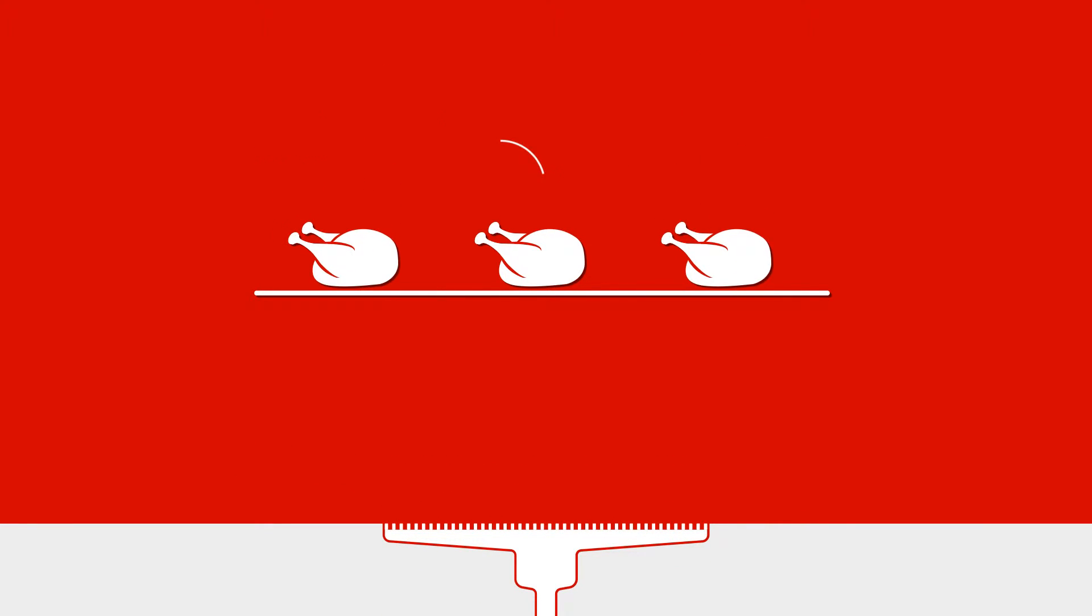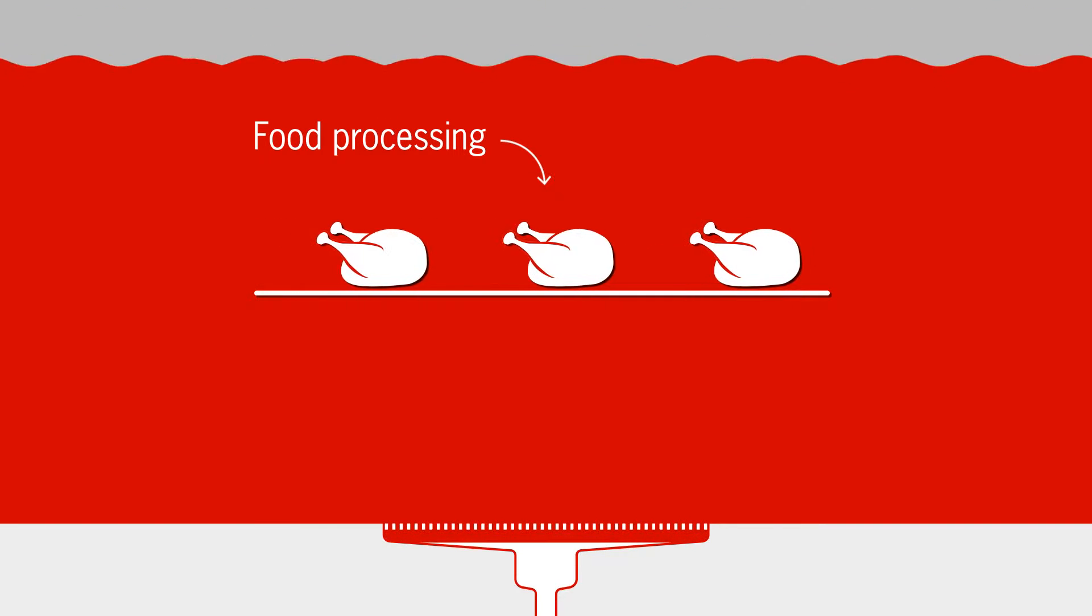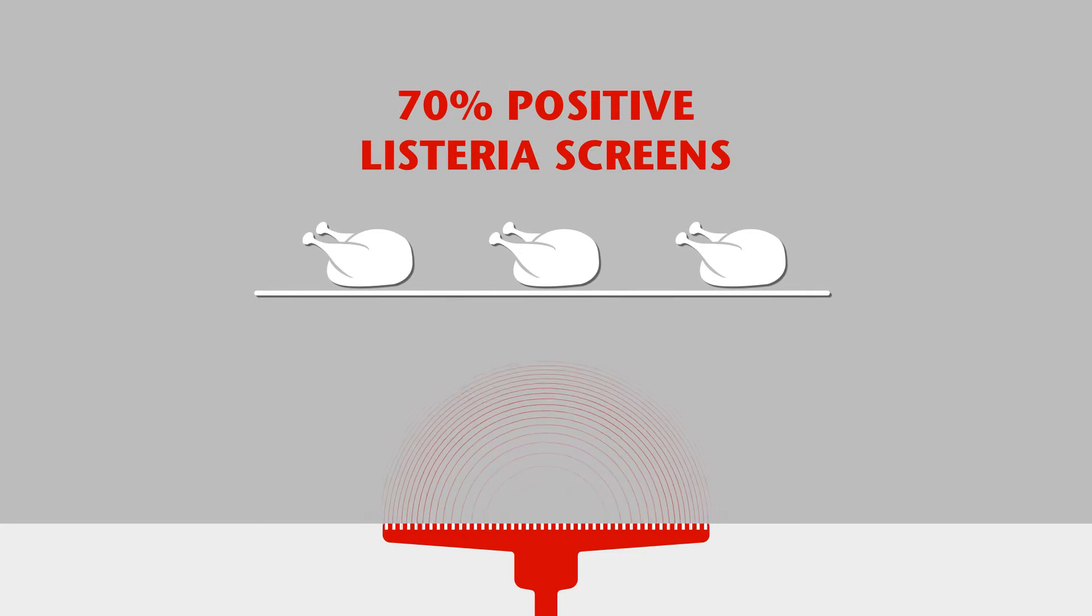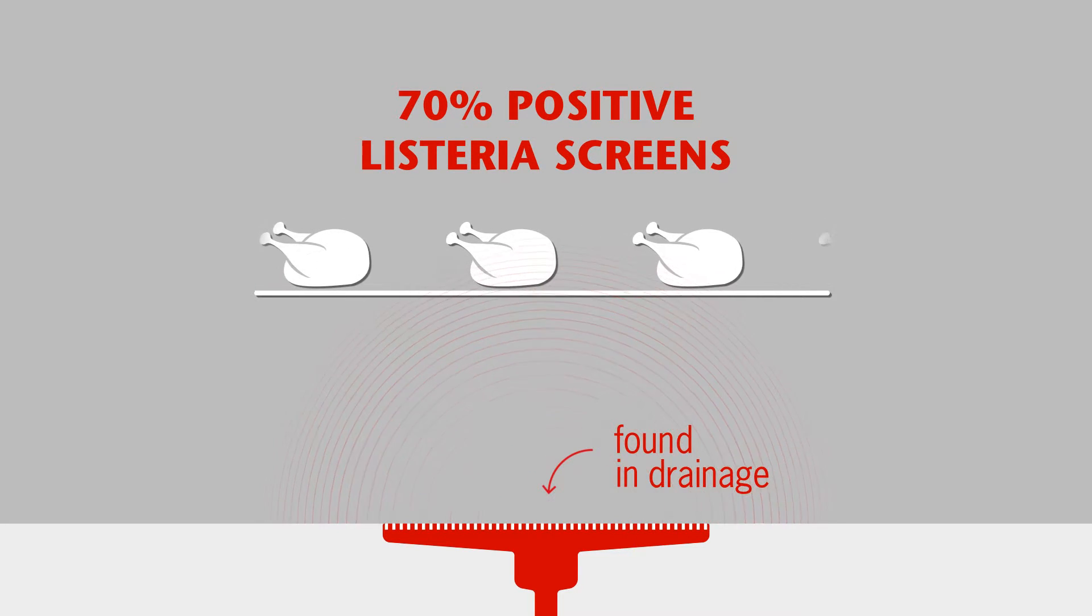We are in the food processing environment, which is literally washed down into the drainage every time it is cleaned. No wonder that 70% of positive listeria screens are found in the drainage.